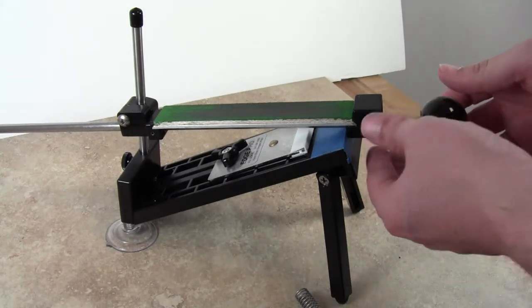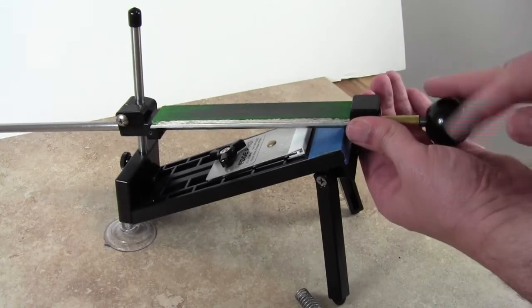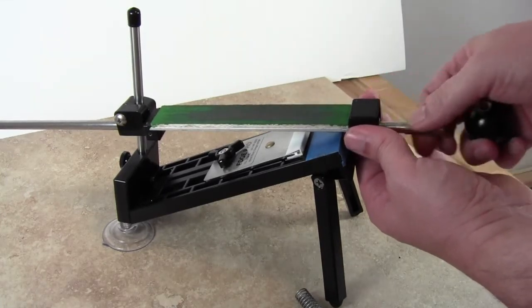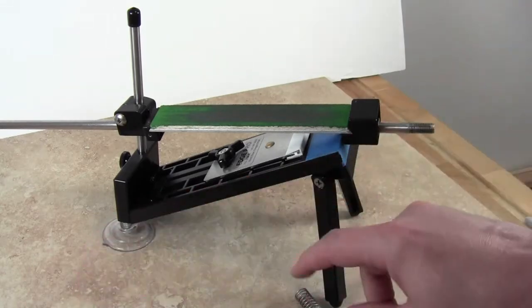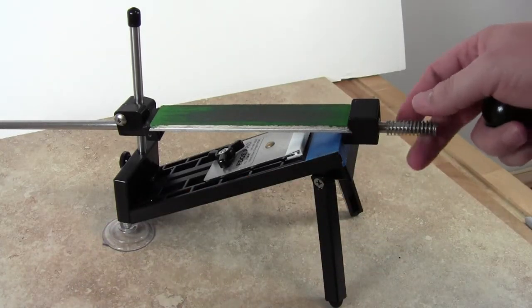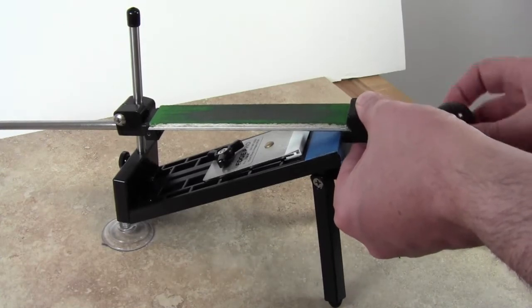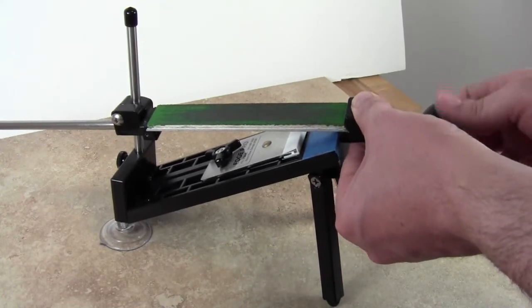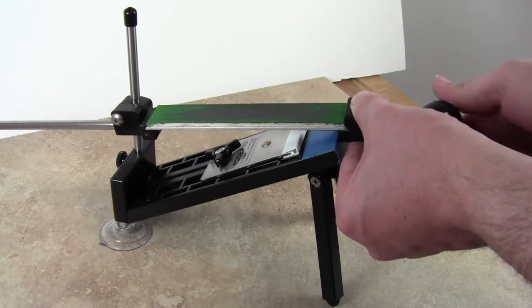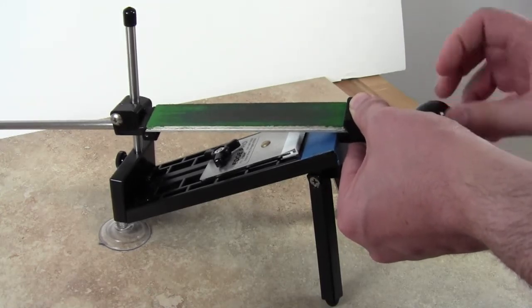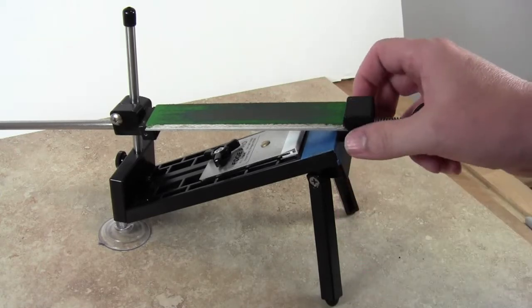all you have to do is take off the ball, remove this little sleeve, replace the sleeve with the spring, and then screw it on until you get some decent resistance on there. I would say that's about enough.